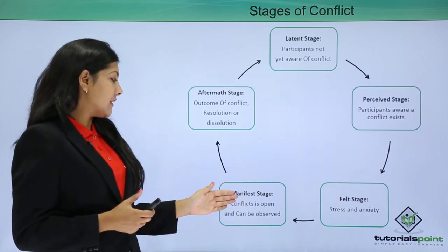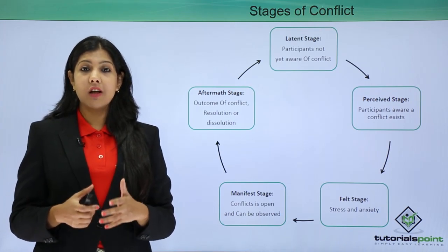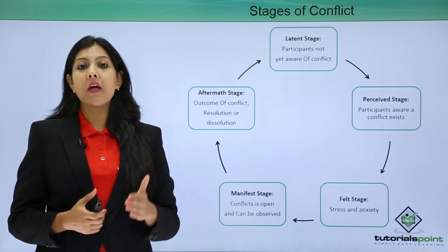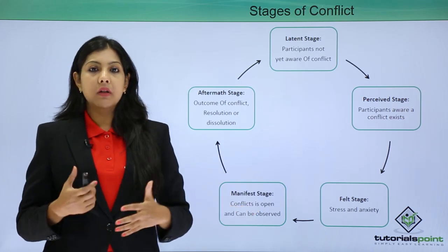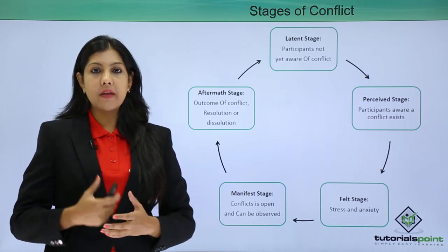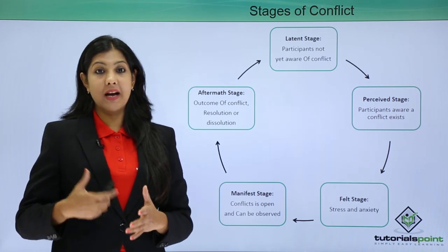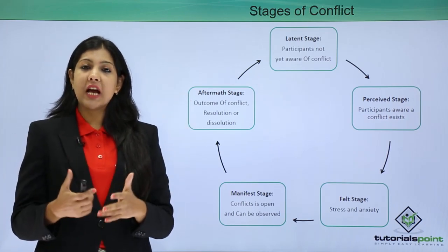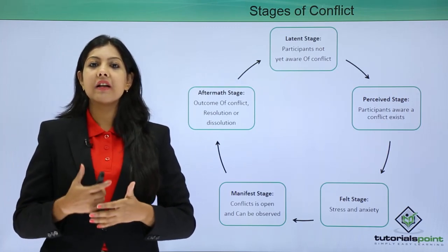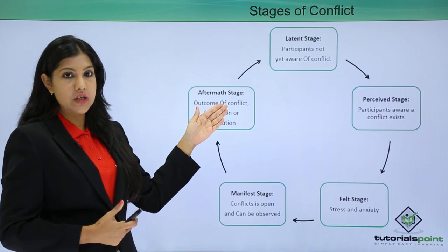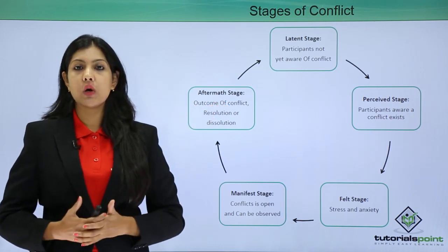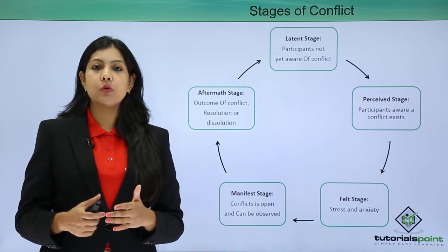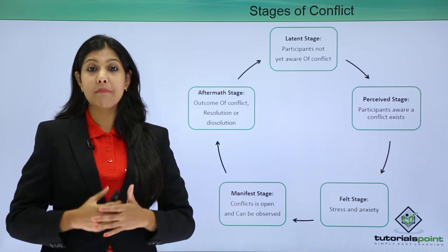The third stage is the felt stage, where there is anxiety and stress — you feel that conflict is present. The fourth is the manifest stage, where conflict is open and observable. People show through body language, words, and tone that conflict exists. The final stage is the aftermath stage — what happens after the conflict has been dealt with, whether it was resolved or not.